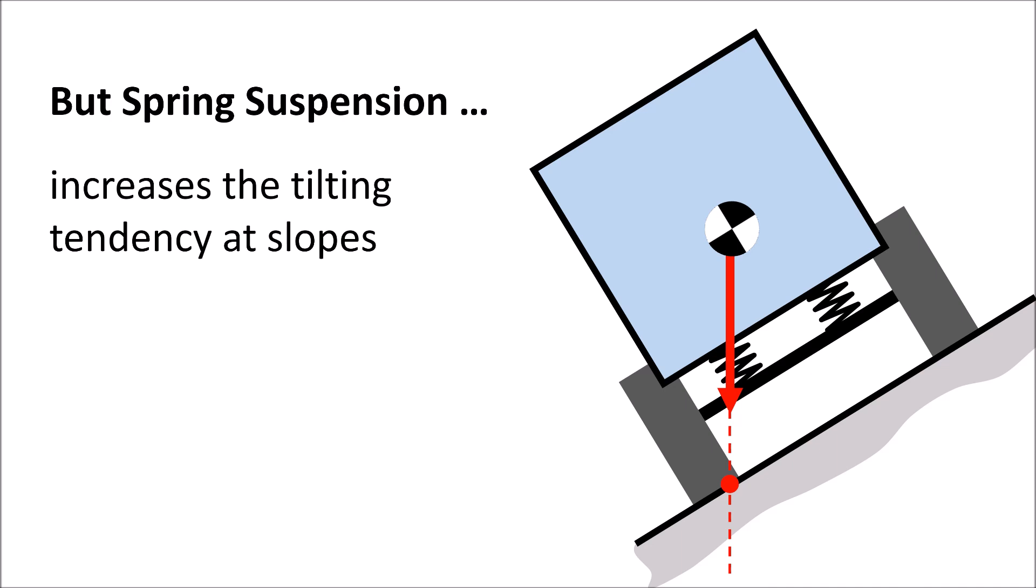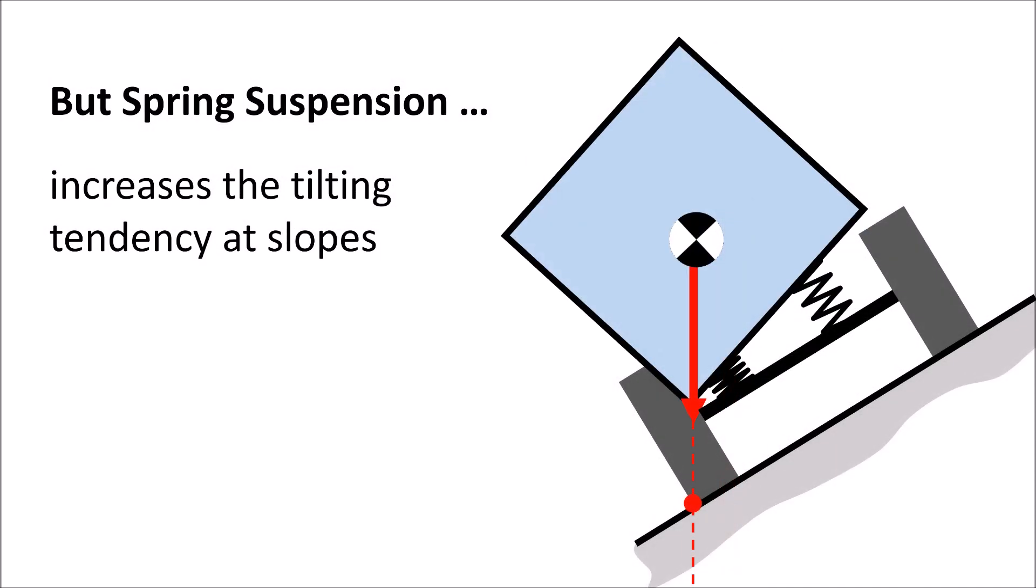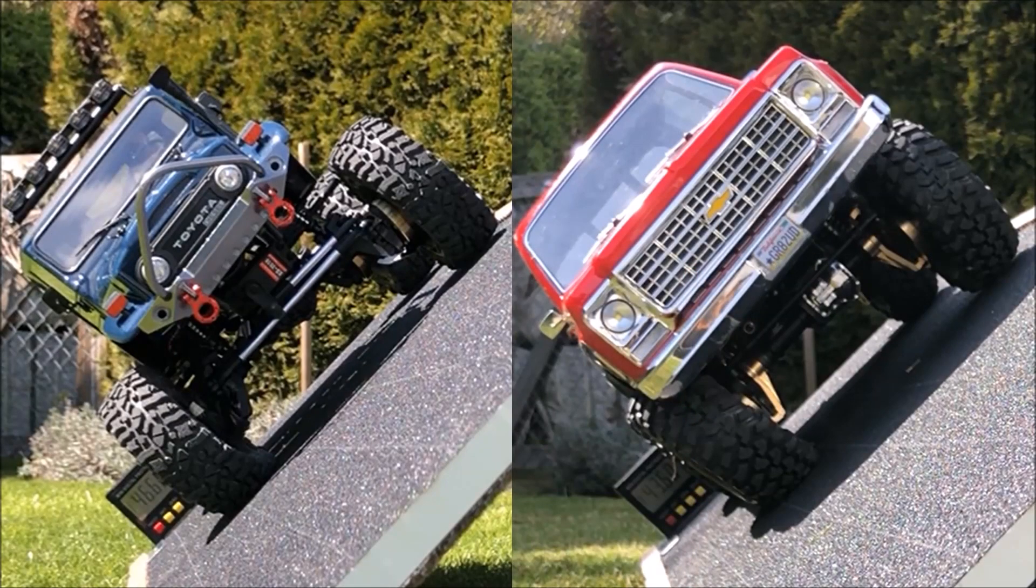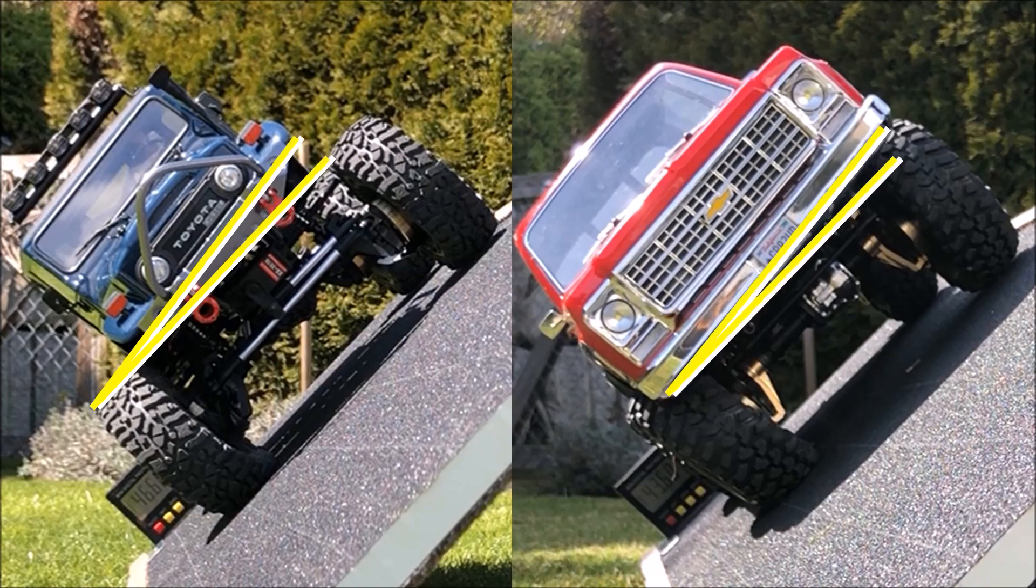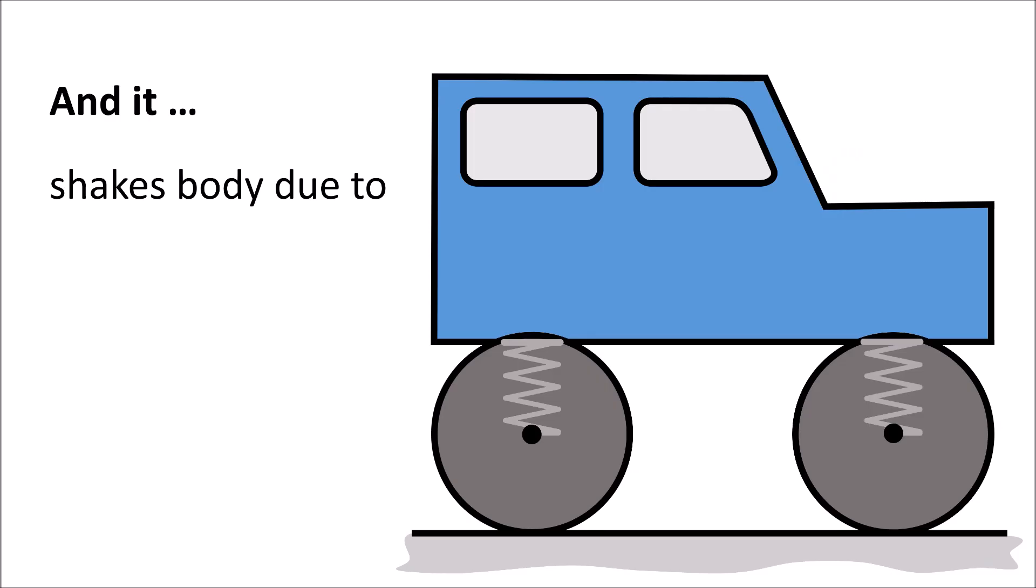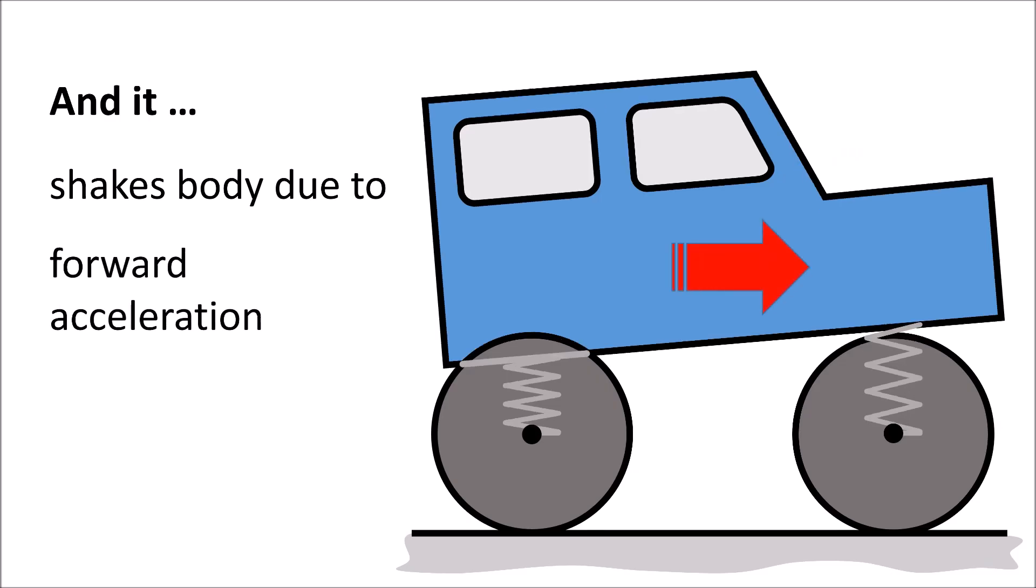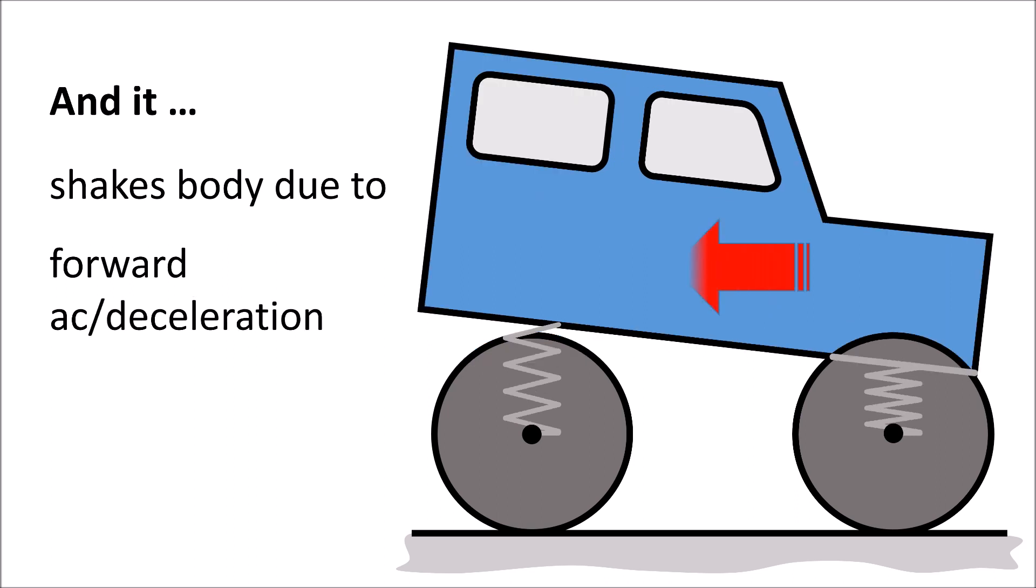The suspension increases the risk to tilt at slopes and it shakes the body due to acceleration and deceleration in forward direction.